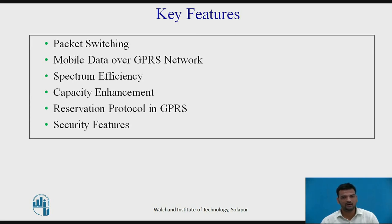Spectrum efficiency: packet data means GPRS radio resources are used only when mobile users are actually sending or receiving data; otherwise, the same time slots or resources can be provided to a voice signal. Capacity enhancement: the actual number of simultaneous mobile data users supported depends on the application and how much data is being transferred. For example, if a user wants to access a small version of a website, the data rate depends on the size of that particular web page.